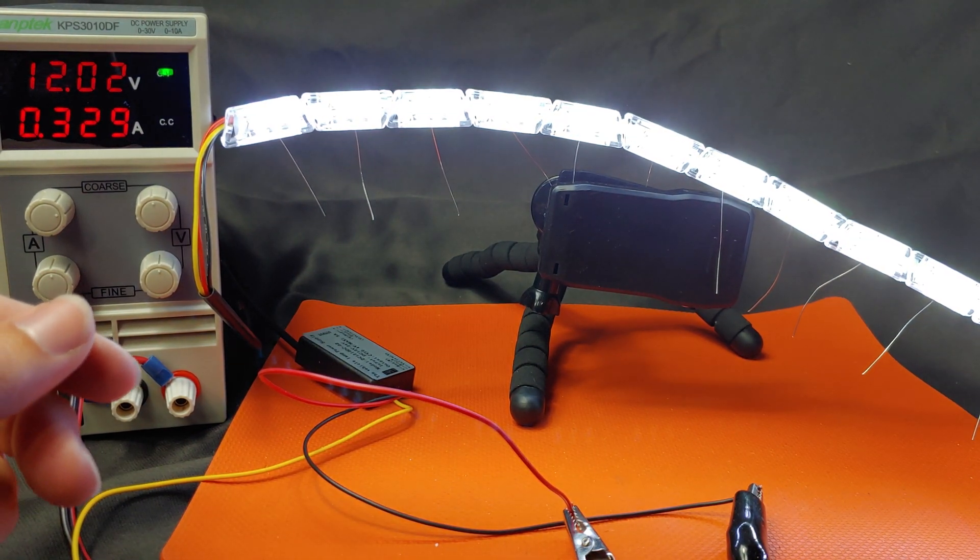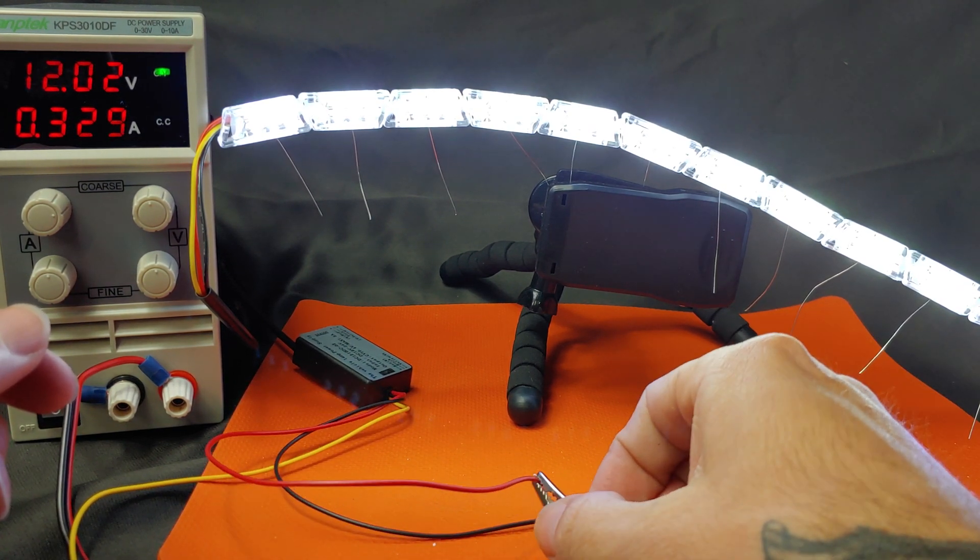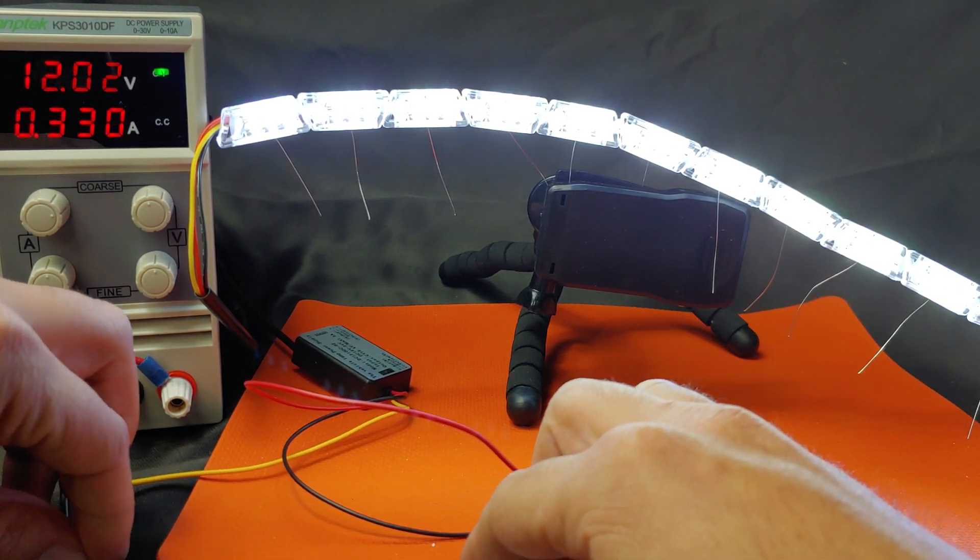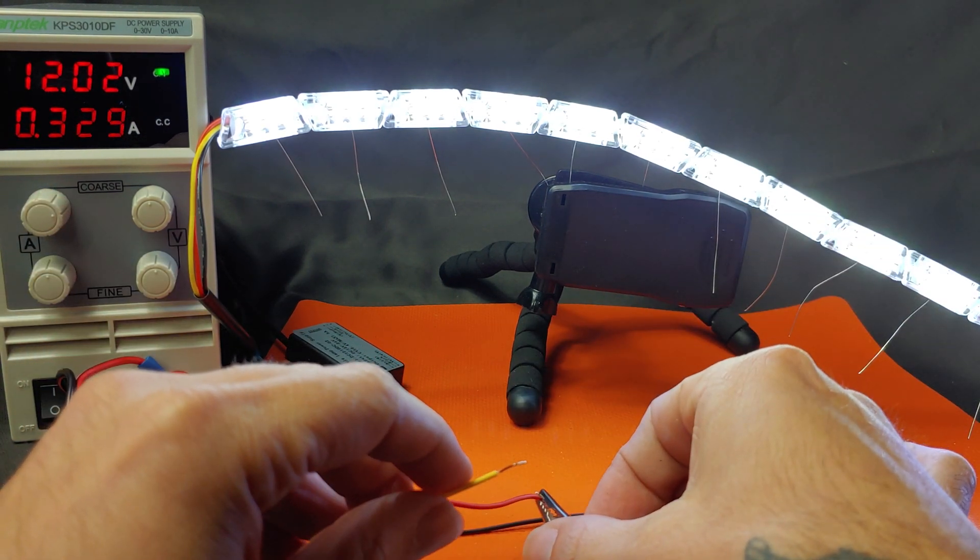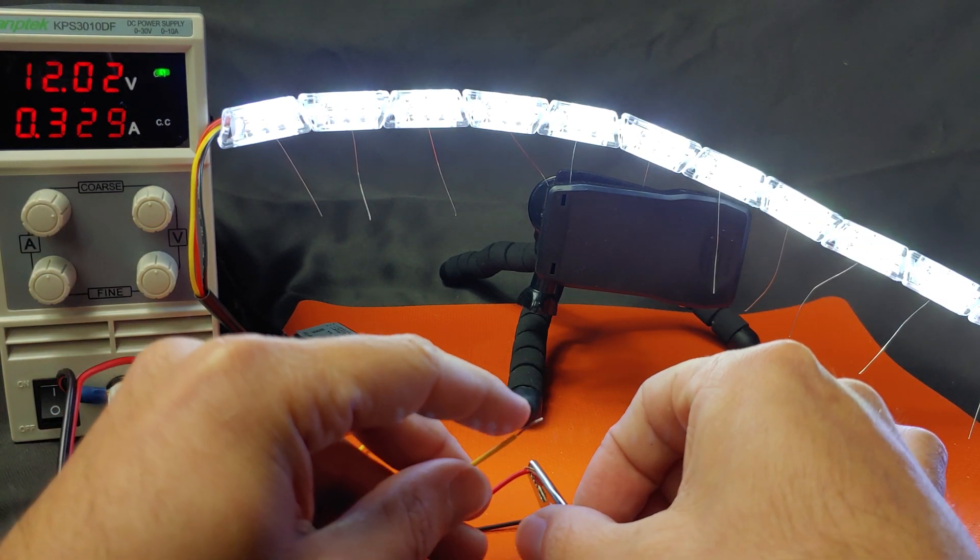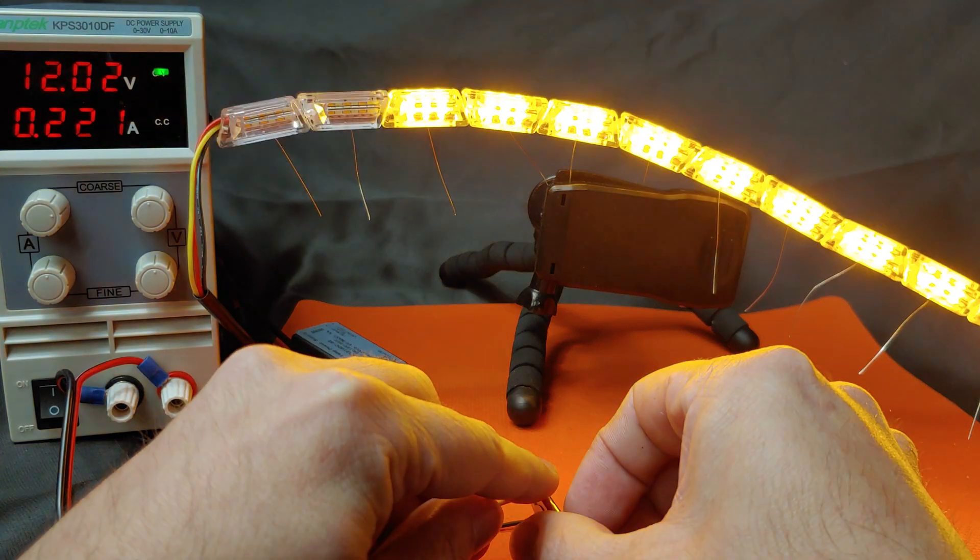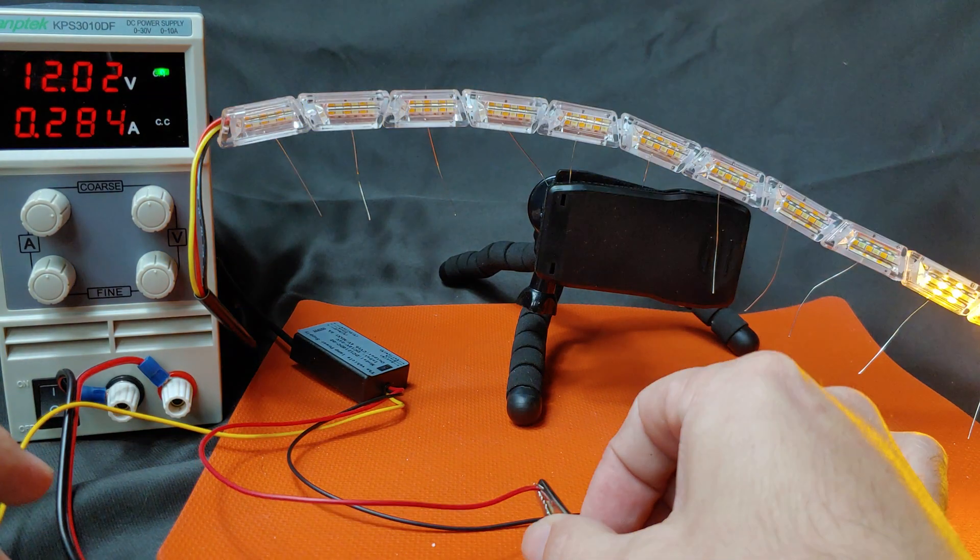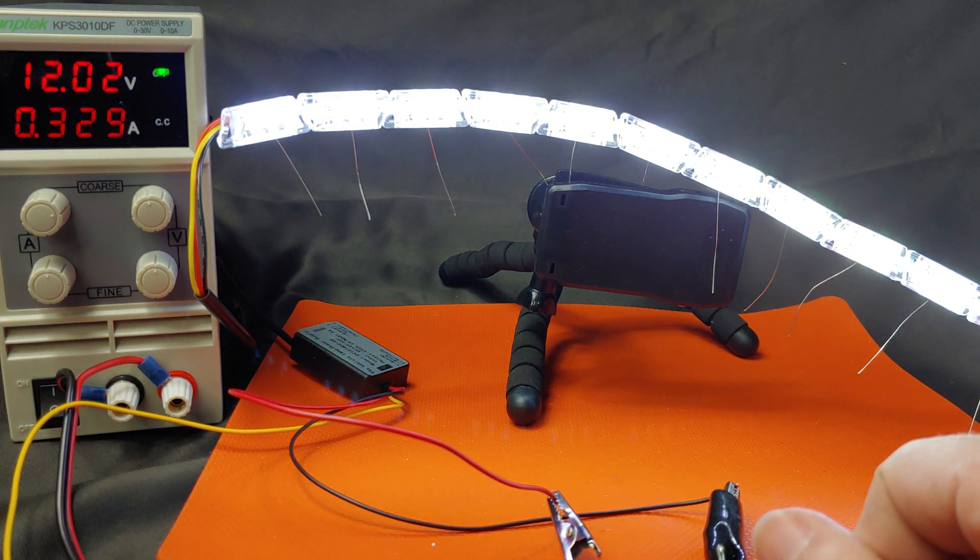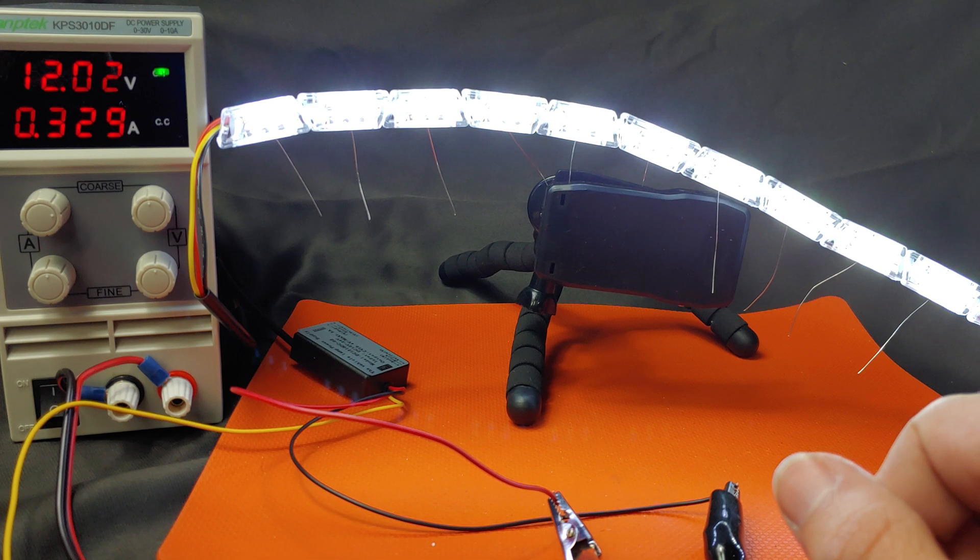Right now, I only have the red and black wires connected, but if I grab the yellow turn signal wire and connect it up to the power, this is when your turn signal activates. And after your turn signal turns off, it returns back to white.